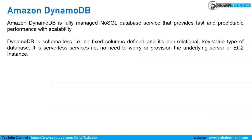Amazon DynamoDB is a fully managed NoSQL database service that provides fast and predictable performance with scalability. DynamoDB is schema-less — no fixed columns defined — and is a non-relational key-value type of database. It is a serverless service, so there is no need to worry about or provision the underlying server or EC2 instance.